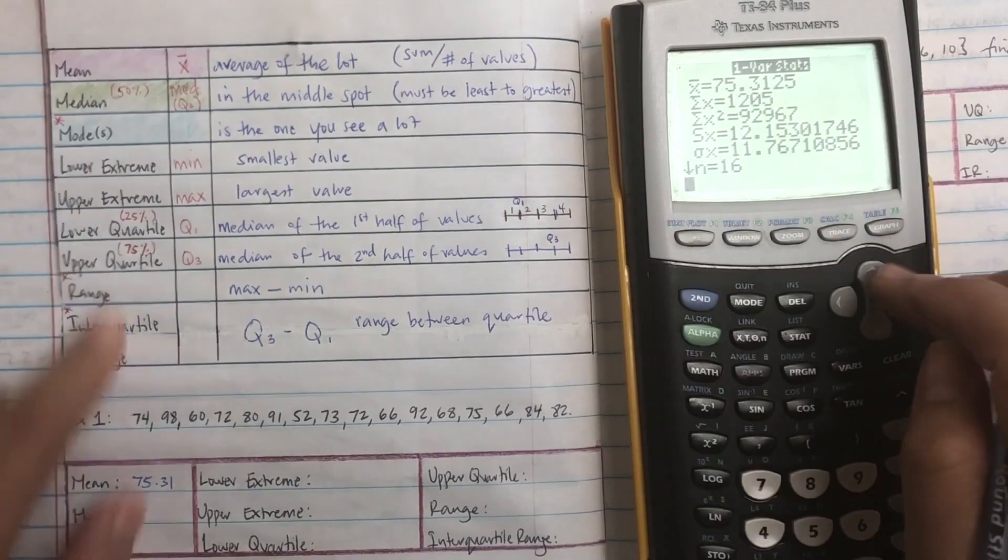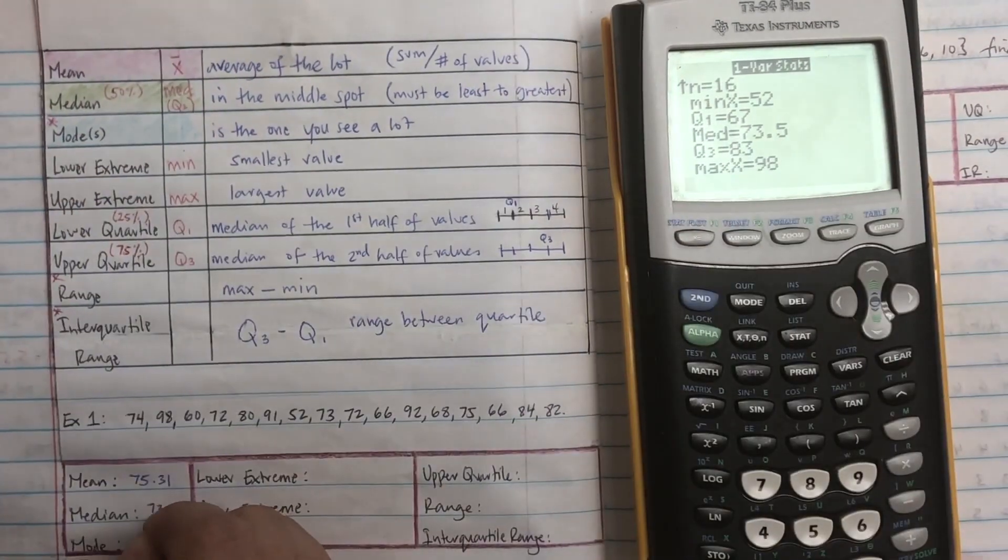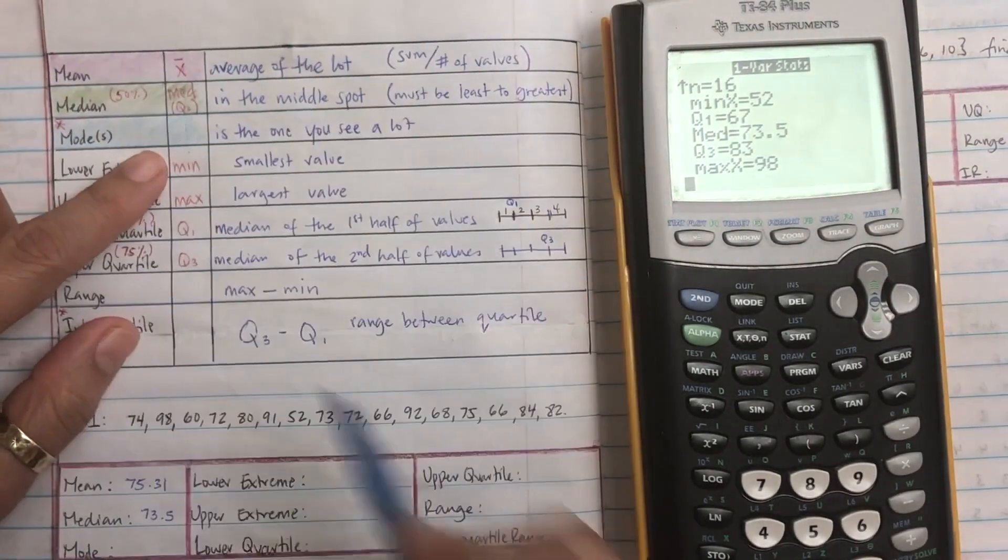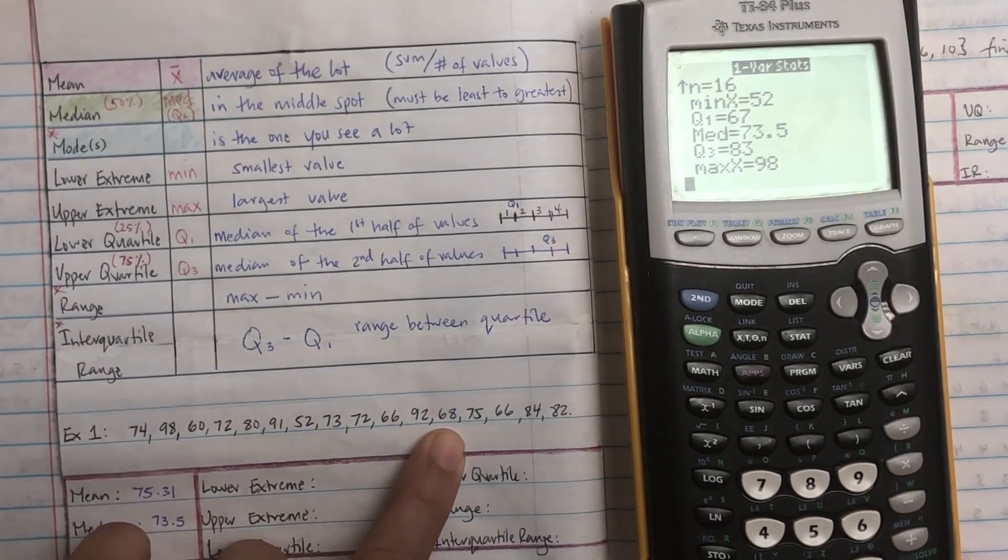So the mean is the one with the x-bar, so that first one is the mean. So the mean is 75.31. The median, you're looking for something that says mid, middle, and that's 73.5. The mode is the one that you see a lot, so that one's not in the calculator. You just have to look, and the way I do this is I use my colors.